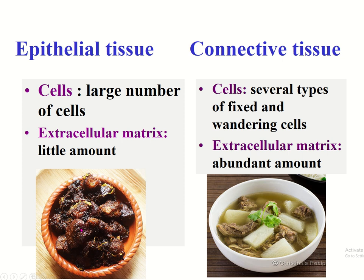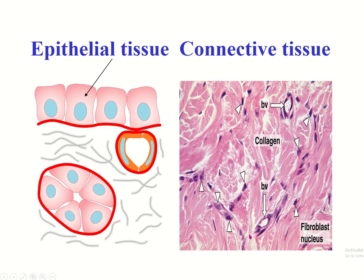In epithelial tissue, the cell number is large but the amount of extracellular matrix is little. In connective tissue, the cell number is less but the amount of extracellular matrix is greater. You can see the number of cells is more than the intercellular substance in epithelial tissue, while in connective tissue the number of cells is less than the extracellular matrix.